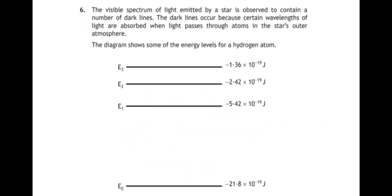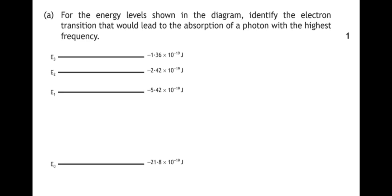Number six. The visible spectrum of light emitted by a star is observed to contain a number of dark lines. The dark lines occur because certain wavelengths of light are absorbed when light passes through atoms in the star's outer atmosphere. The diagram shows some of the energy levels for a hydrogen atom. For the energy levels shown in the diagram, identify the electron transition that would lead to the absorption of a photon with the highest frequency.